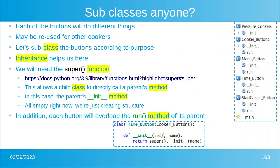How about some subclasses? Each of the buttons is going to do different things, and you may reuse those buttons for other cookers. So let's subclass the buttons according to their purpose using method inheritance. I'm introducing a new function called super — this allows a child class to directly call its parent's method. We'll call the parent's initialization method to make sure whatever gets initialized in the parent also gets initialized with us. Each button will also overload the run method of its parent, because each button is going to do something a little bit differently.